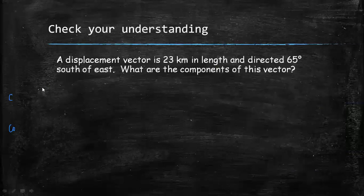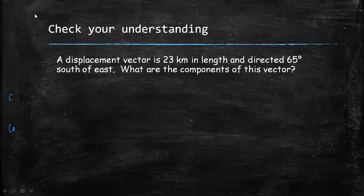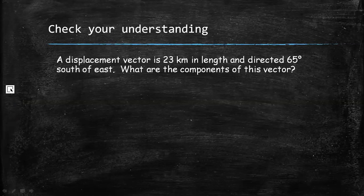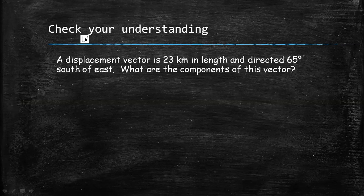Now let's check your understanding. A displacement vector is 23 kilometers in length and directed 65 degrees south of east. What are the components of this vector? Your answer must be posted in the comment section of this video.